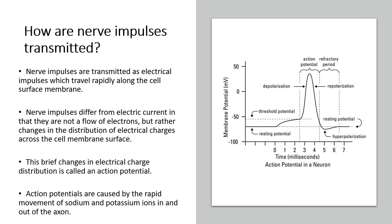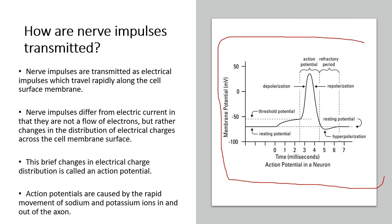This graph over here is the most important graph in this section of the chapter. It shows what we call the resting potential, which is simply when there is nothing happening within the cell — the cell is at rest. When you're sleeping, your body is probably at resting potential because you're not responding to any stimuli. Then we have the threshold potential, which is usually about minus 50 millivolts, often due to a difference in the amount of sodium and potassium ions moving in and out of the axon.